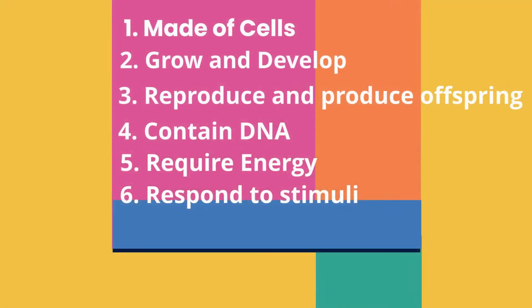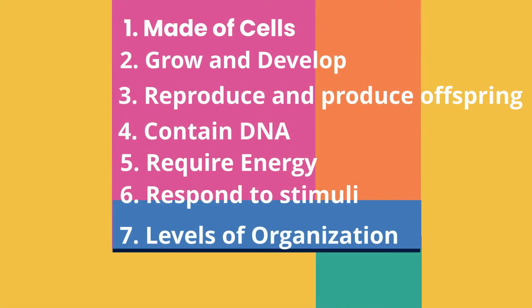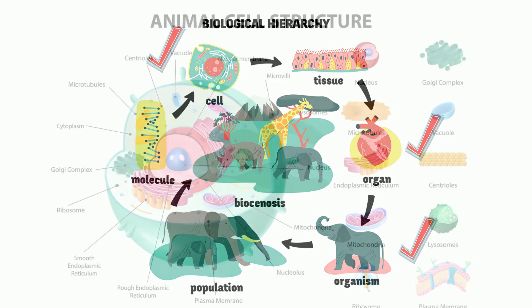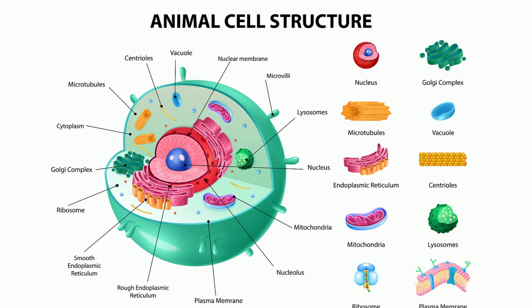Living things have levels of organization that work together to keep the organism alive. For example, humans have cells that create tissues, tissues create organs, organs create organ systems, and this creates an organism. A cell has organelles that all work together — like the ribosome, the mitochondria, and the nucleus — that all work together to keep the cell alive.